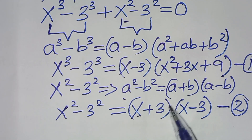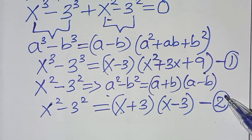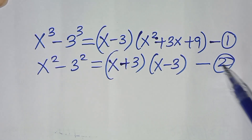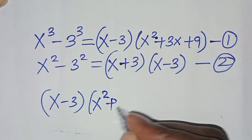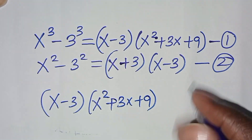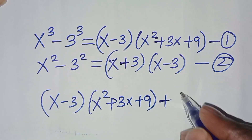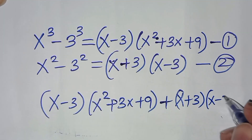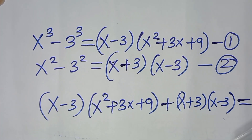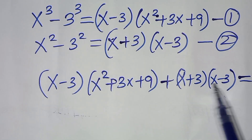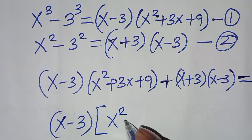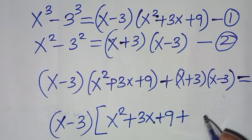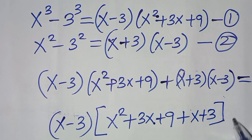Combining equation 1 and equation 2, we have x minus 3, times x squared plus 3x plus 9, plus x plus 3 times x minus 3, this is equal to 0. Factoring out x minus 3, we have x minus 3 times the quantity x squared plus 3x plus 9 plus x plus 3, this is equal to 0.